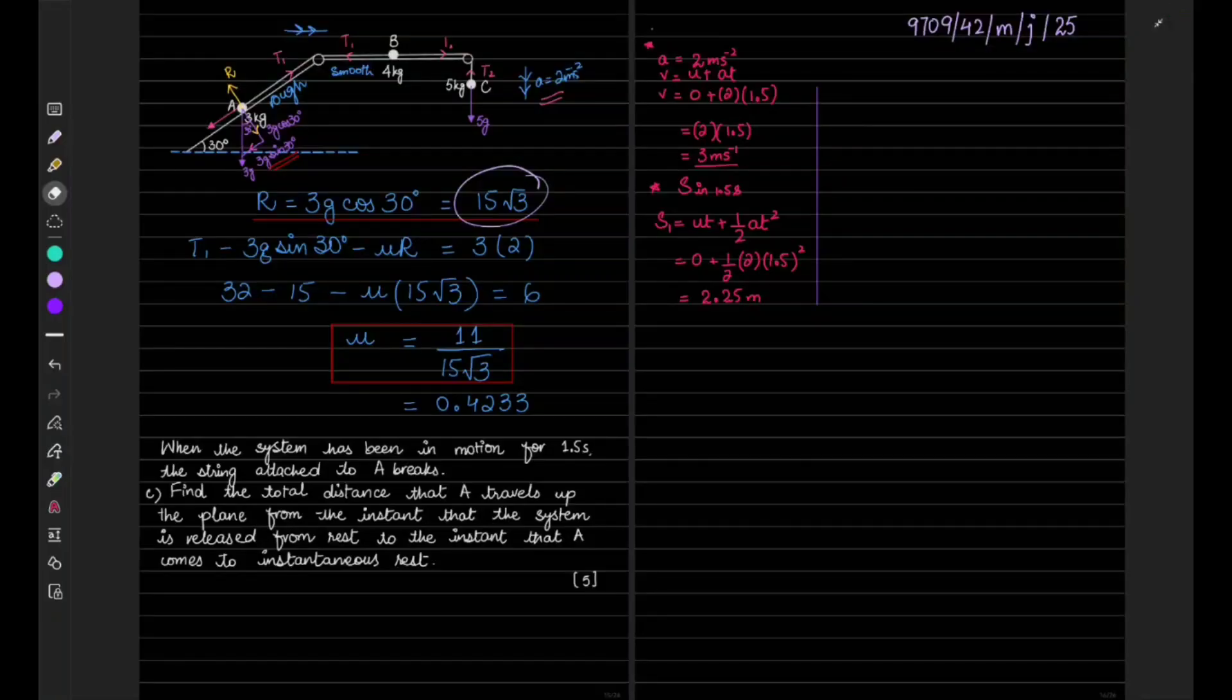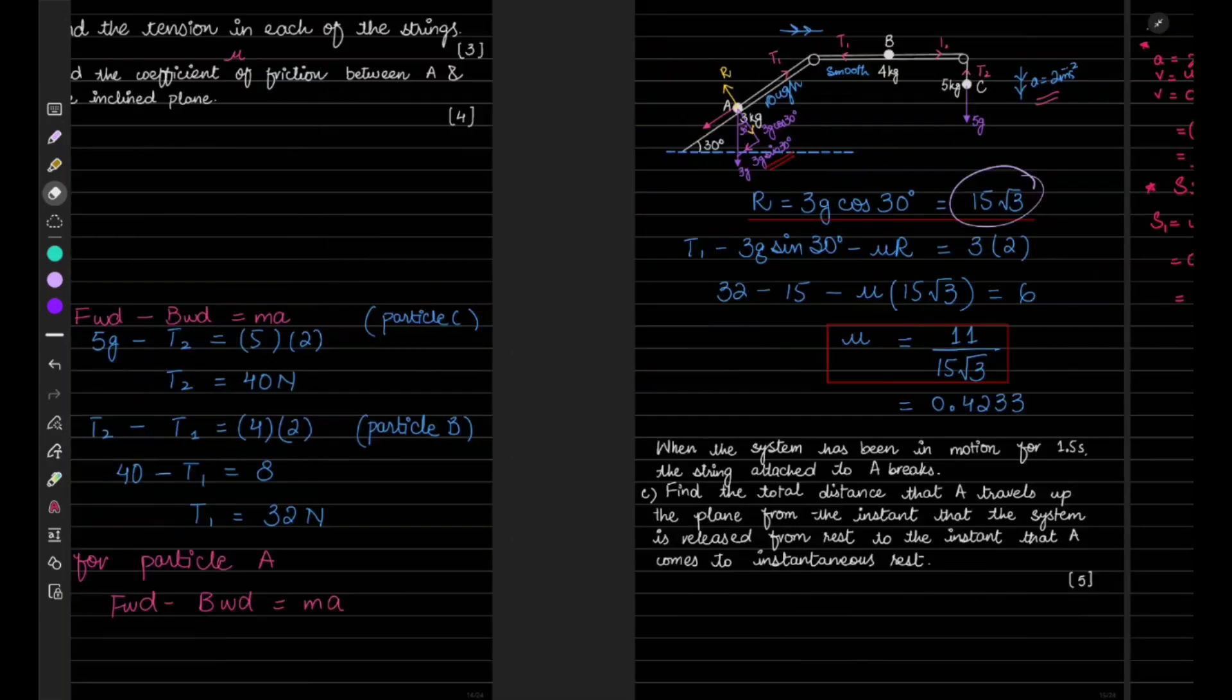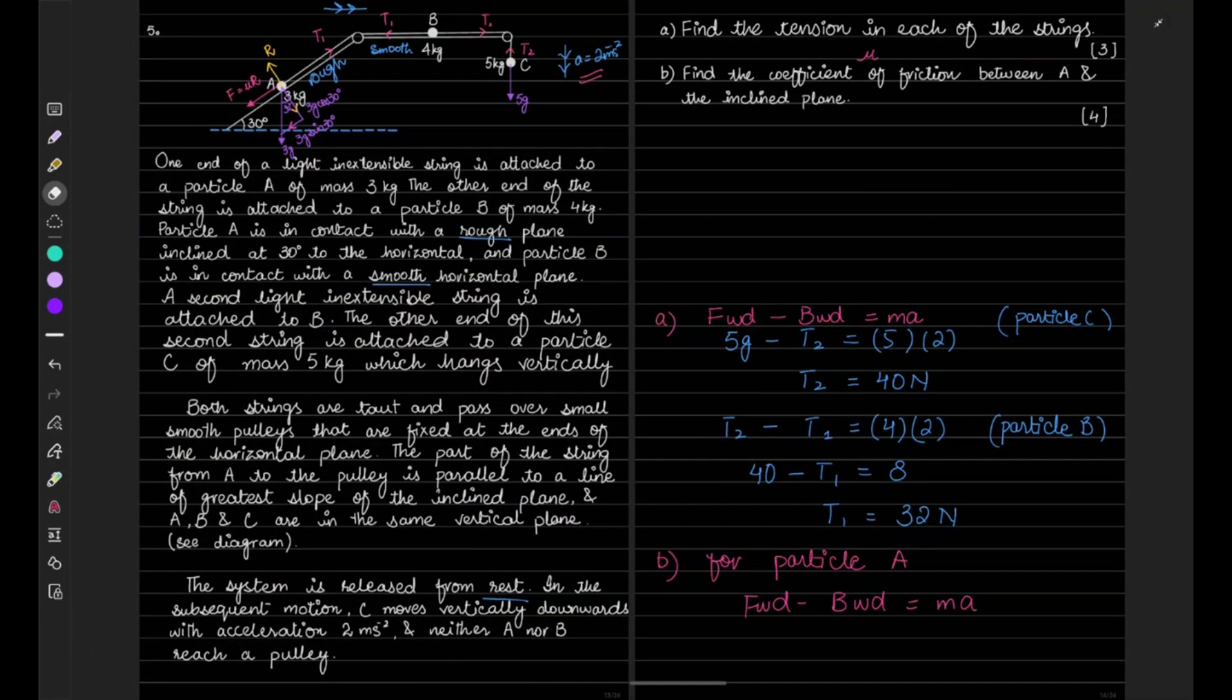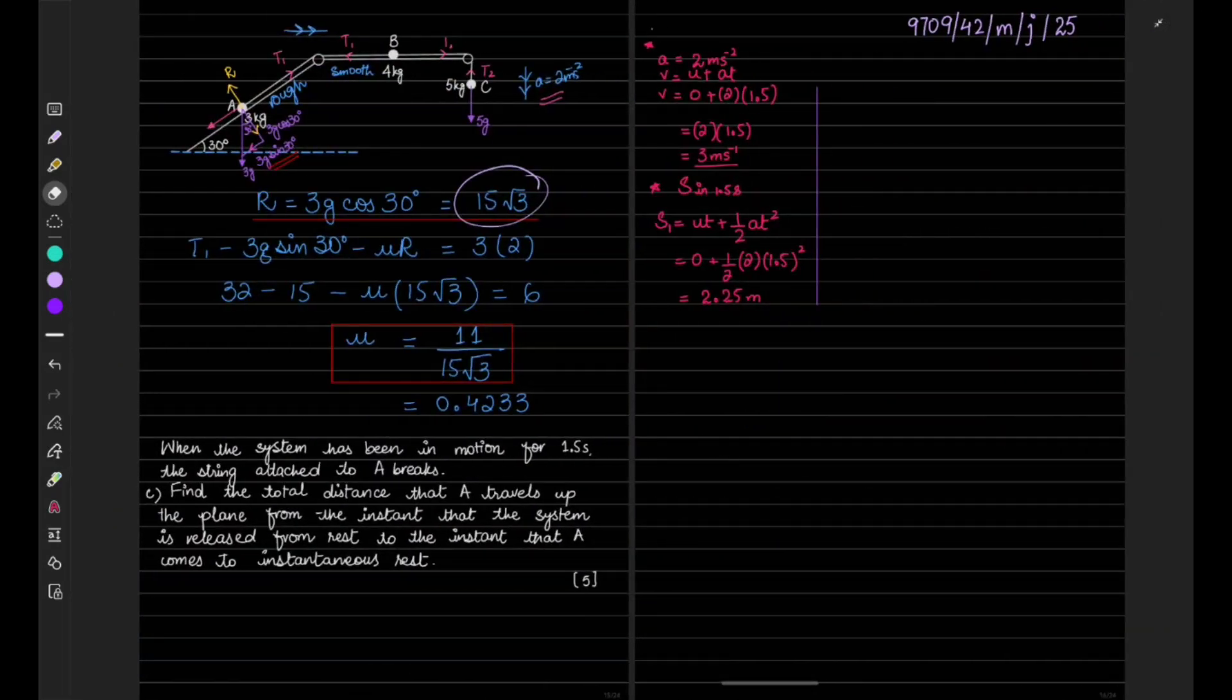Assalamu alaikum, welcome back. We are doing A-levels Mechanics paper 9709 variant 42 May/June 2025, and we were doing question number five. I want to redo part C because there is a minor error in that.